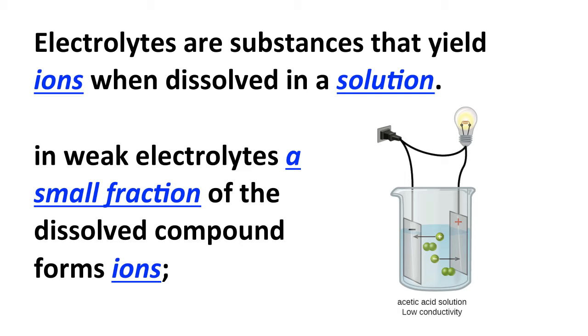and weak electrolytes are substances in which only a small fraction of the dissolved compound forms ions, unlike the essentially 100% of the compound that forms ions in a strong electrolyte. For acetic acid, it's only about 1% or 2% of the acetic acid molecules that form ions. In other substances, the percents can be different, but it's going to be quite a bit smaller than the 100% in a strong electrolyte.